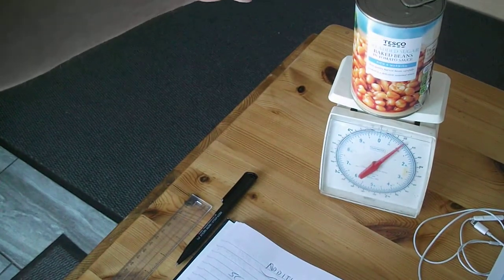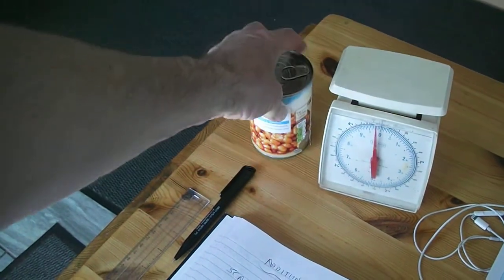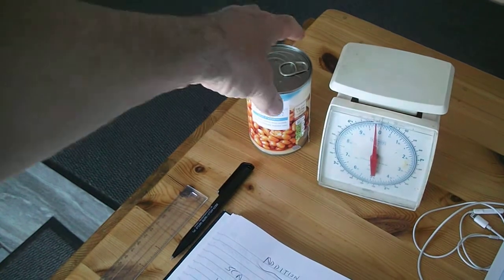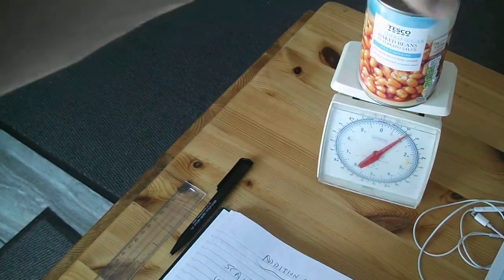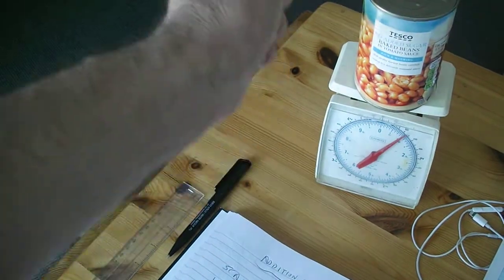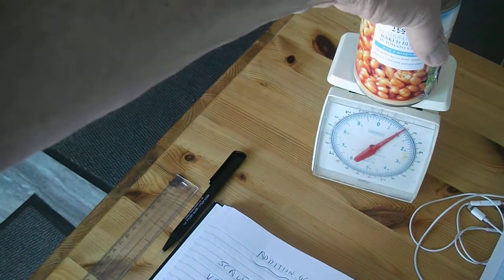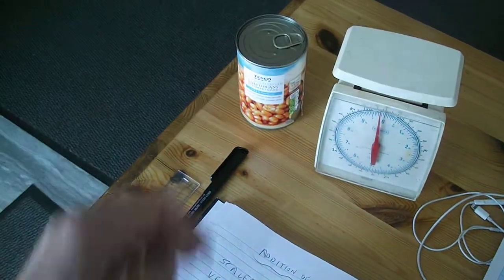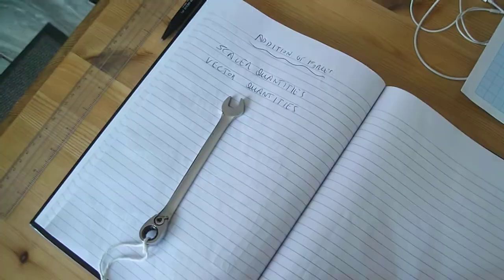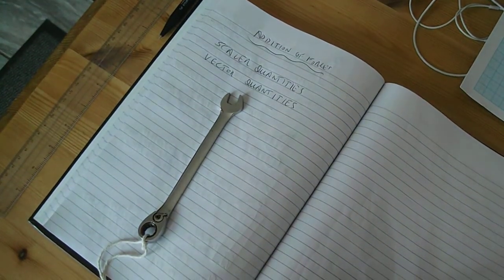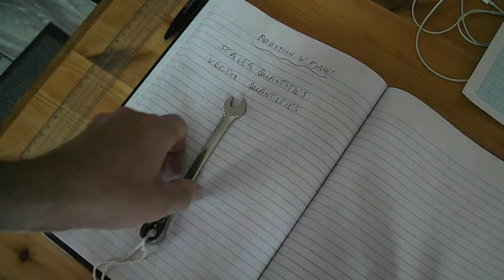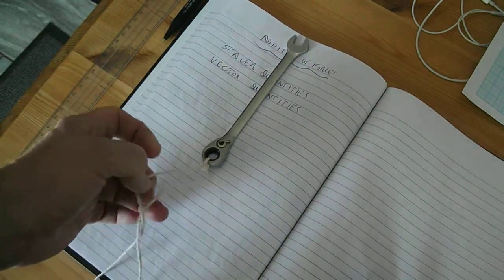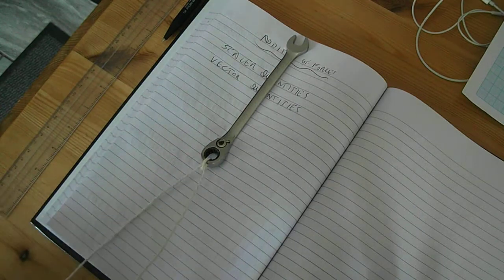But it's not actually telling me which direction the tin of beans is going. We know that it's going down, but the scales is not telling me that. In forces, we need to know not only the size or magnitude of the force, but also its direction.